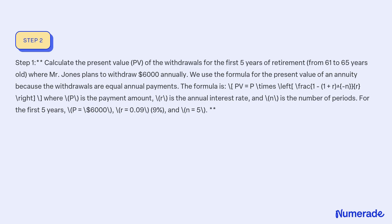We use the formula for the present value of an annuity because the withdrawals are equal annual payments. The formula is PV = P × (1 − (1 + R)^−N) / R, where P is the payment amount, R is the annual interest rate, and N is the number of periods. For the first 5 years: P = $6,000, R = 0.09, and N = 5.